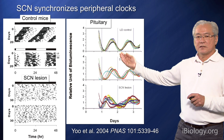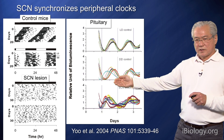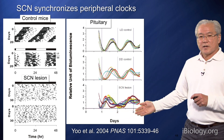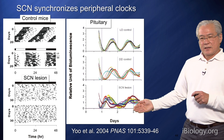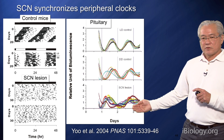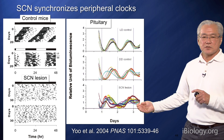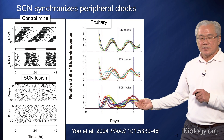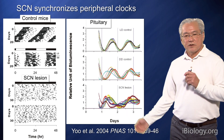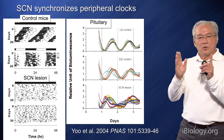But when we lesion the suprachiasmatic nucleus, we find that peripheral tissues become desynchronized. When we compare the peripheral rhythms from different mice, we see that they have adopted different phases — each mouse has a slightly different phase for its pituitary and other peripheral tissues. Interestingly, the SCN is not necessary for maintaining rhythms in peripheral tissues, but plays a role in synchronizing or coordinating those rhythms.